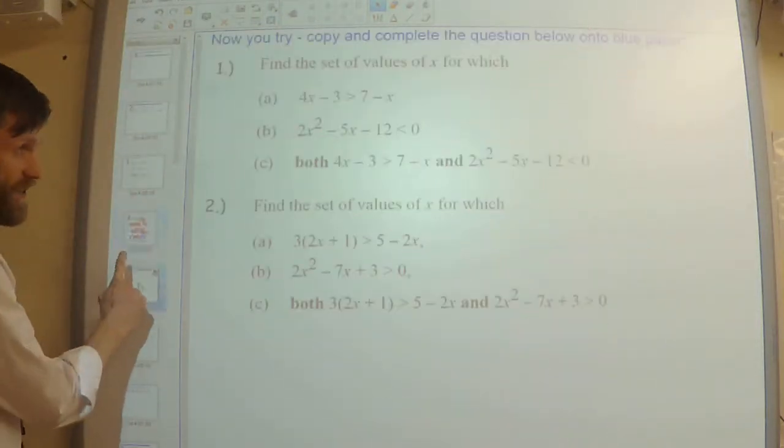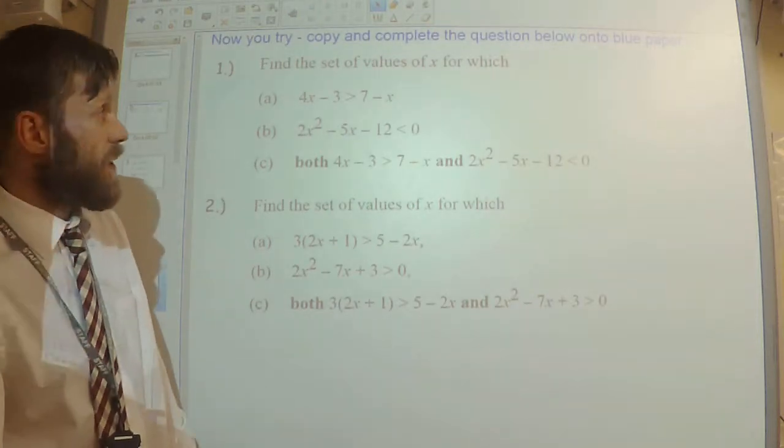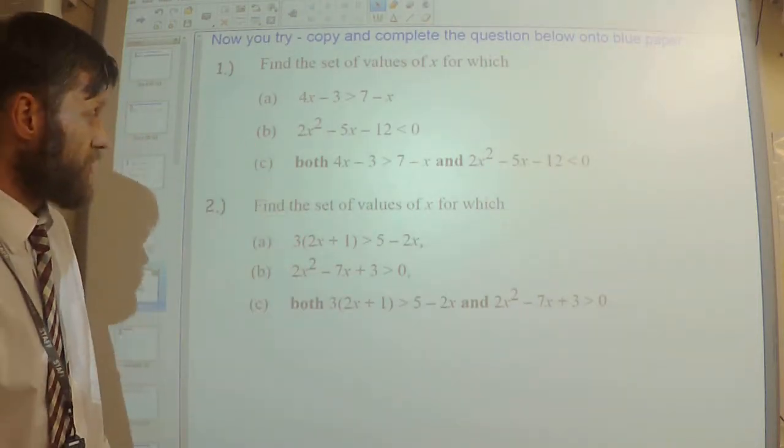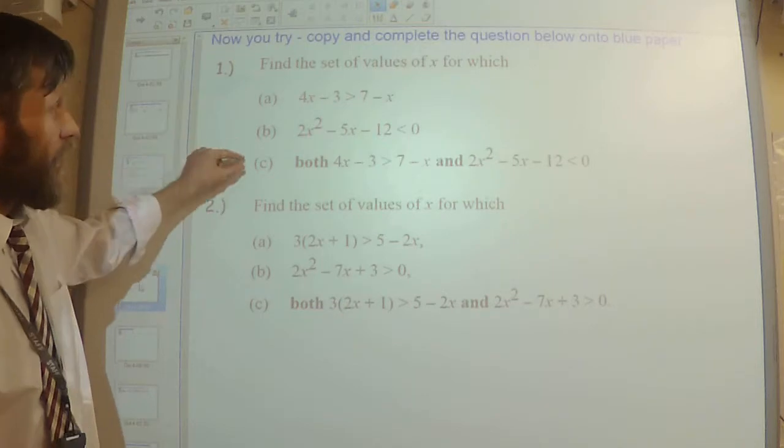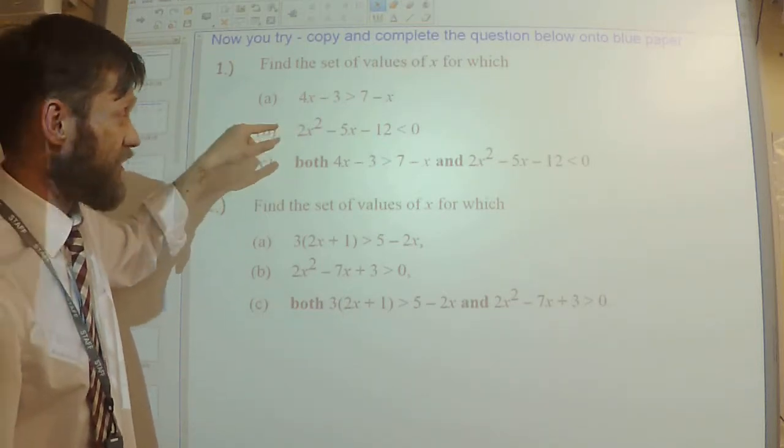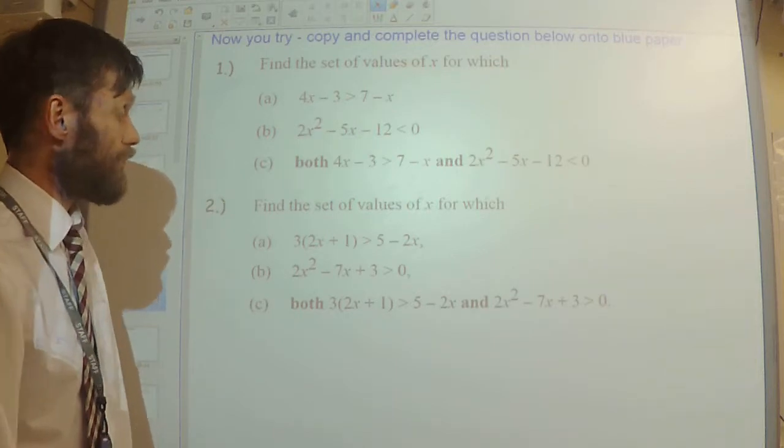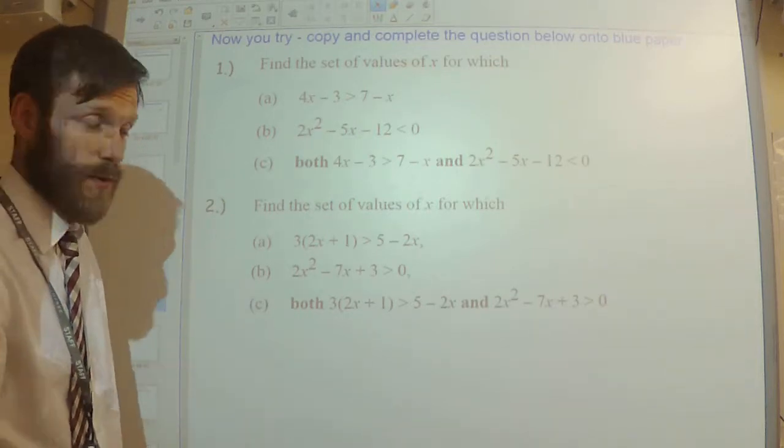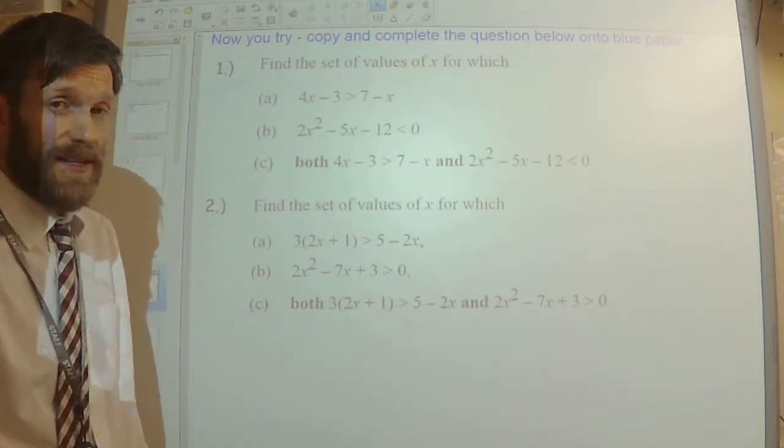So correct your mistakes, and then on some blue paper, copy down these questions. So you've got question 1, three parts. Notice you're going to need to do the factorisation yourself here. But they're pretty similar questions.